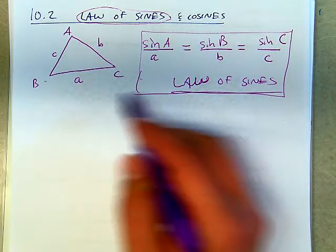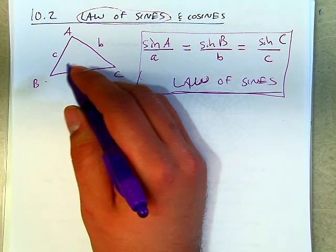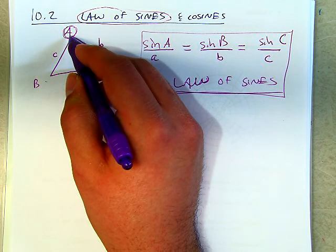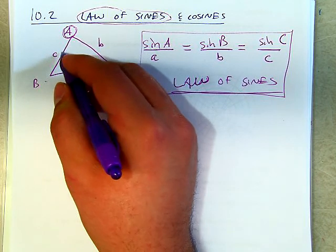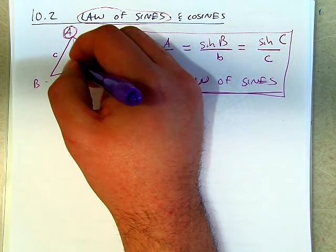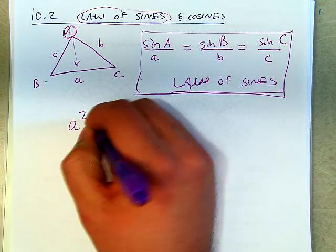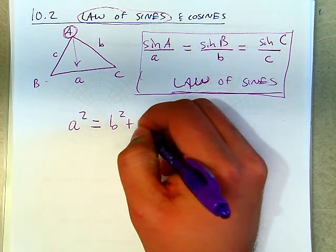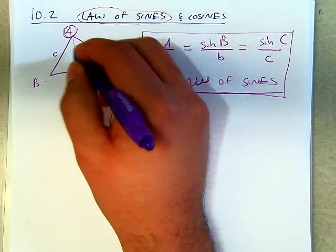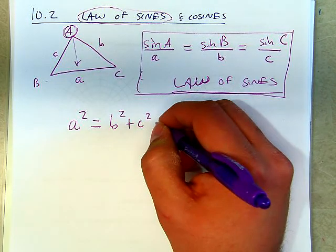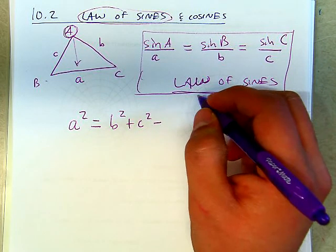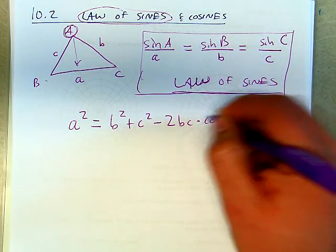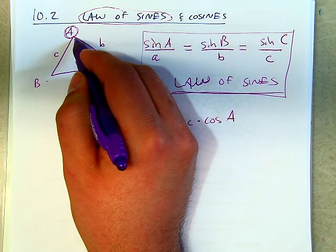The law of cosines takes, let's say we start with angle A. This is how I always remember it. Start with angle A. You're going to take the side opposite it, which is a. You're going to square it. And then it's almost like the Pythagorean theorem. Now you do the other two sides squared, so b squared plus c squared. And then, because this is not a right triangle, there's like this little adjustment that you have to make to this. Then you're going to subtract 2 times b times c, and then cosine multiplied with the cosine of this angle A here.